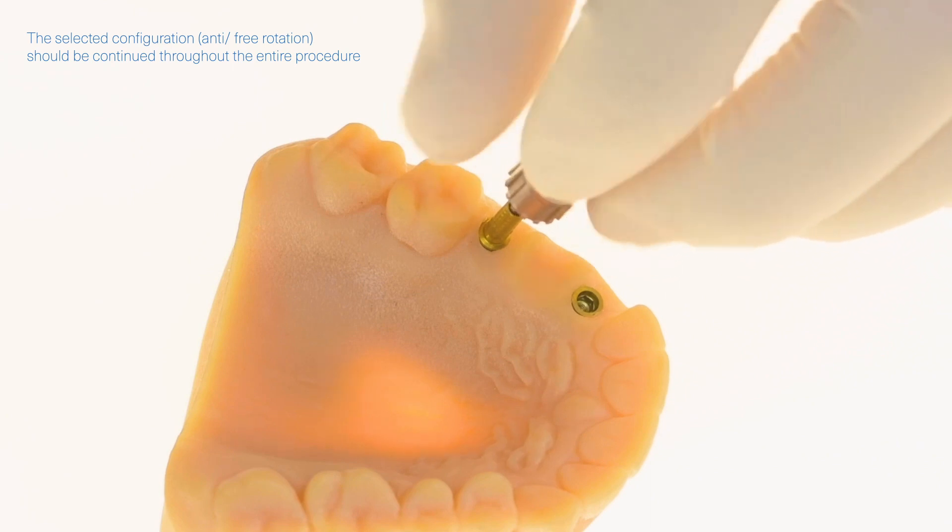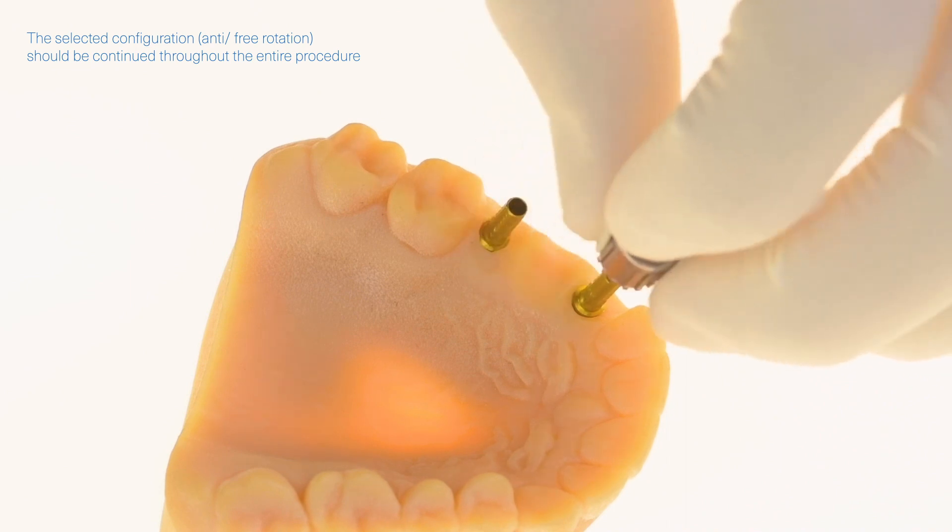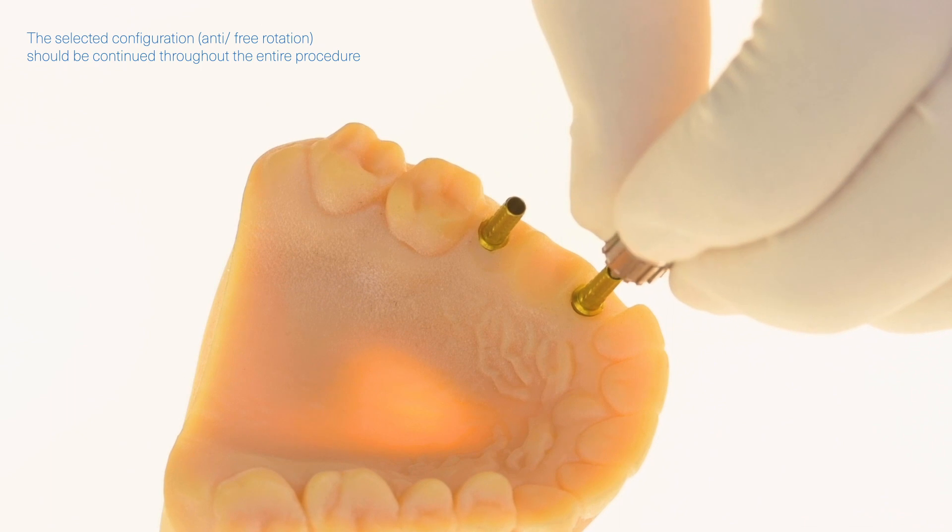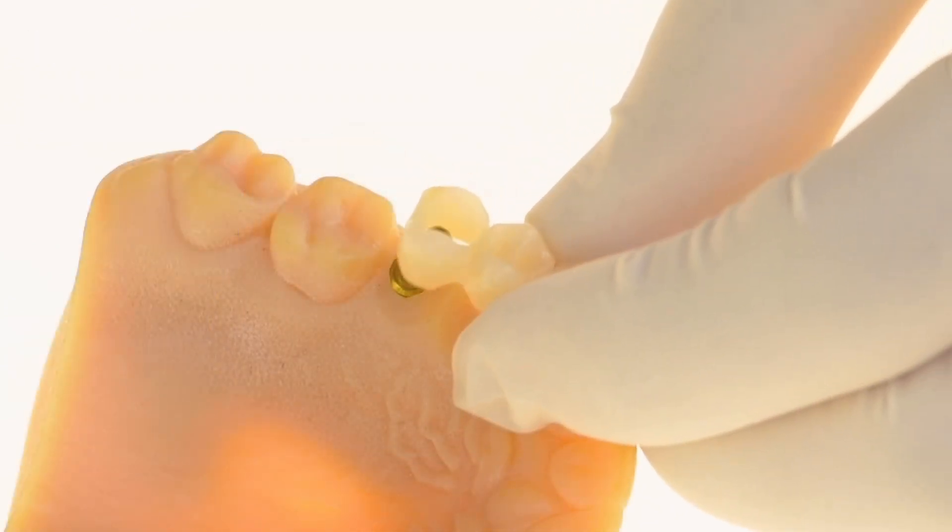For multiple unit bridges, you can restore using free rotation components or a combination of both free rotation and anti-rotation abutments. This may be followed by placing a temporary bridge.